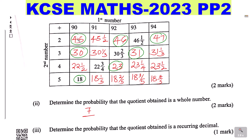All the values in the table are the outcomes. Counting them: 1, 2, 3, 4, 5, 6, 7, 8, 9, 10, 11, 12, 13, 14, 15, 16, 17, 18, 19, 20. So out of all the outcomes, which are 20, the probability that the quotient is a whole number is 7 over 20.